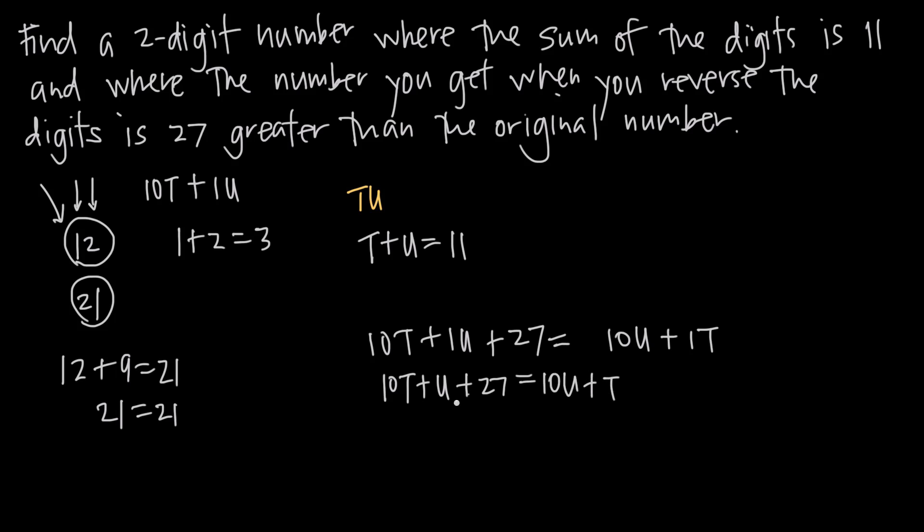If we subtract t from both sides, 1t from both sides, we're going to get 9t plus u plus 27 is equal to 10u.